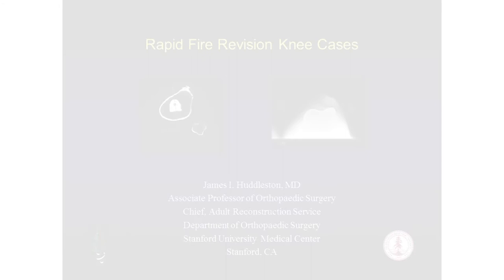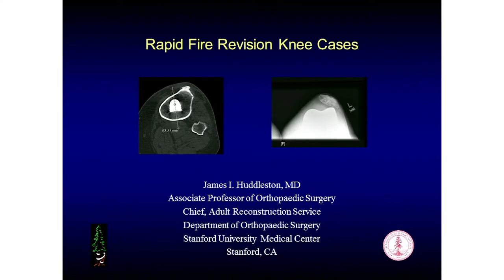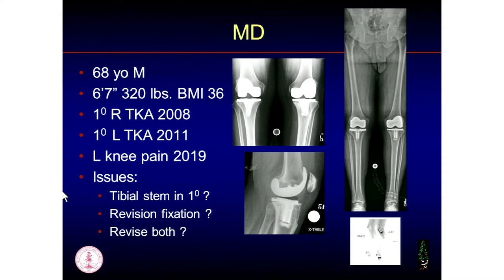Thanks everybody for staying to the end. We do have some cases from one of the audience members that we'll go through in a minute. If anybody else has any cases they'd like to share, please do. So we're going to go through these kind of quickly in the interest of time. This is a 68-year-old male who is a large guy. I did his right side in 2008. Both of these are for standard osteoarthritis — no tricks here. I did the left side in 2011, and he did fine.